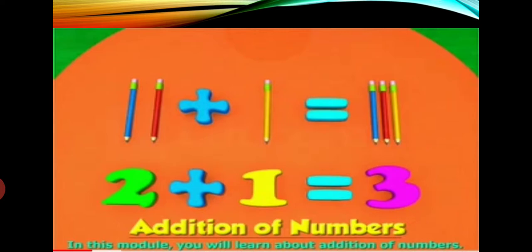We will add some objects as well as see how we can add numbers. In this slide, you can see 2 pencils plus 1 pencil. So, how many altogether? 1, 2, 3. Same — 2 plus 1 equal to 3.